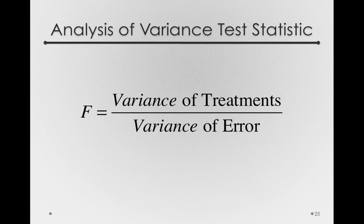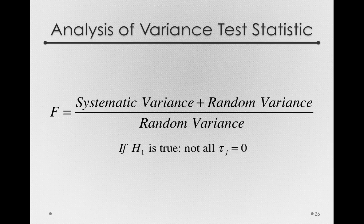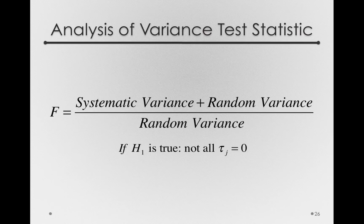Let's look at this more formally. The variance of treatments — the numerator of our test statistic — is actually capturing two things: whatever systematic variance there is in the population, plus the random variability we're always likely to get. We're dividing that by random variance alone. So if H1 is true, that is, not all the tau sub j's are zero, then the numerator captures something in addition to random variability. If there actually are differences between those taus in the population, the variance in the numerator will tend to be very large. A variance differs from zero when observations differ from their mean, and we formed treatment offsets as offsets from the grand mean. So to the degree that there are larger mean differences, that numerator quantity will get larger and larger.